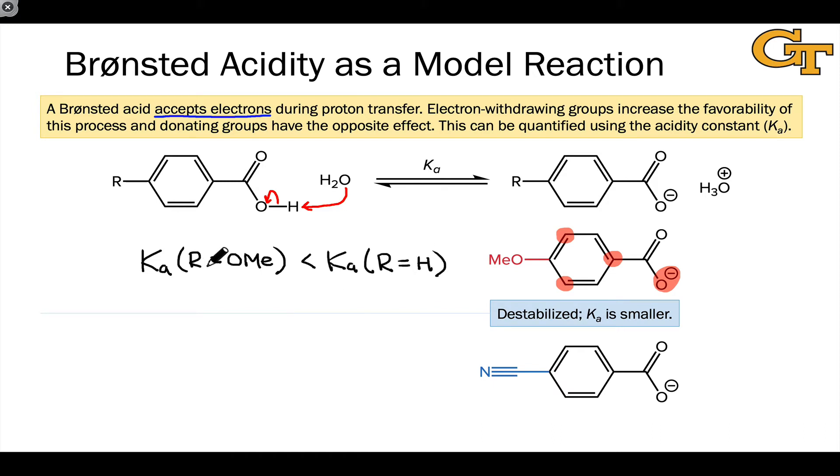Replacing hydrogen with an electron donating group is going to lower the Ka value, make the starting benzoic acid less acidic, make the conjugate base less stable. These are all ways of saying the same thing. The acidity will go down due to the electron donating group. And we can relate this back to the idea that the Brønsted acid accepts electrons and what we talked about in the last video.